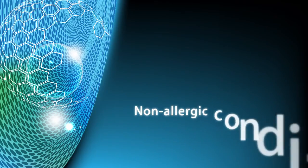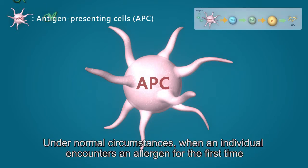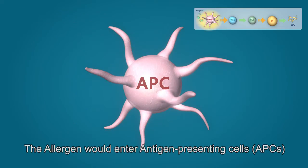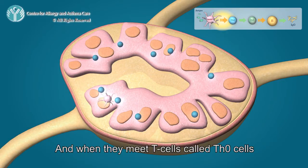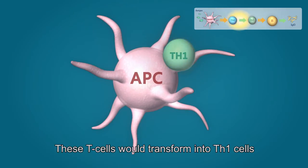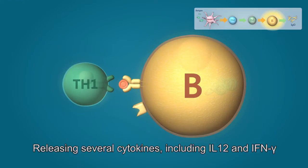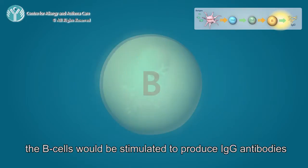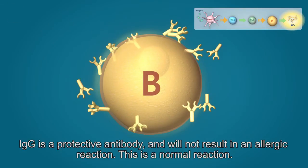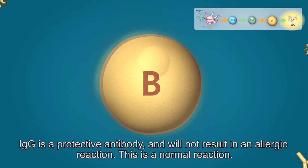Non-allergic reactions. Under normal circumstances, when an individual encounters an allergen for the first time, the allergen would enter the antigen-presenting cells, or APCs. These APCs would then enter the lymphatic system, and when they meet T cells called Th0 cells, these T cells would transform into Th1 cells. The Th1 cells would interact with B cells, releasing several cytokines, including interleukin-12 and interferon gamma, and the B cells would be stimulated to produce IgG antibodies. IgG antibody is a protective antibody and will not result in an allergic reaction. This is a normal reaction.